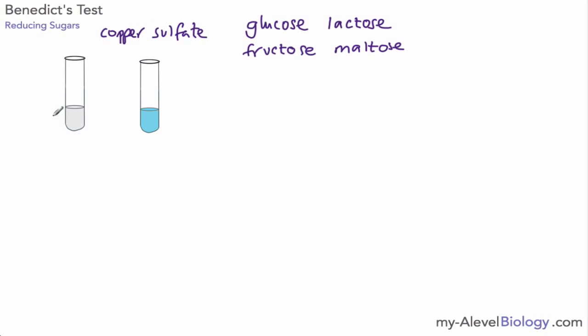So how do we do the test? We have our sample here that we want to test. It can either be some food that's been crushed and mixed with water, or it can just be a solution of our suspected reducing sugar. We add an equal volume of Benedict's solution, and we end up with our mixture which we can test.